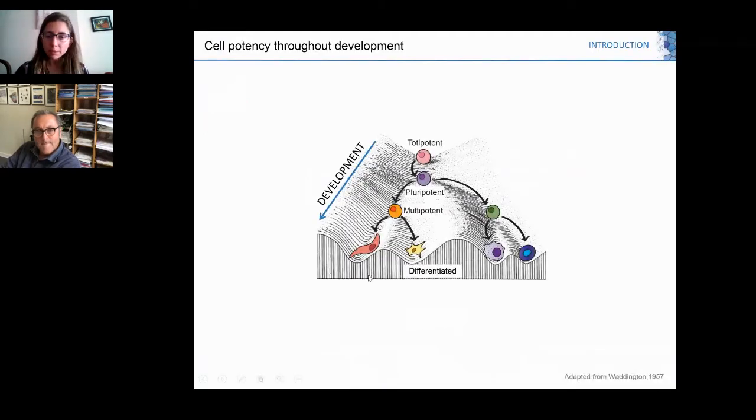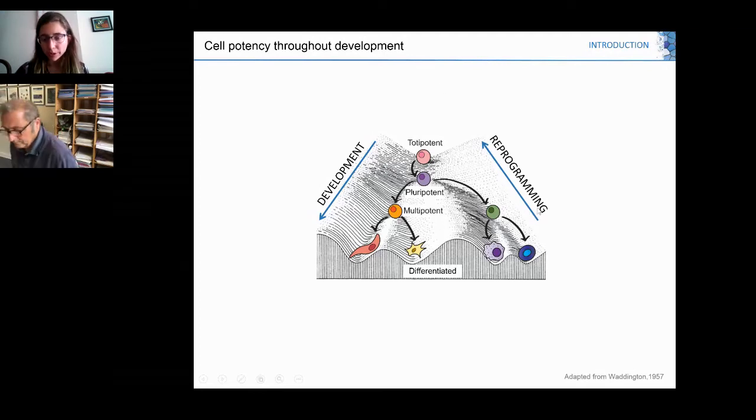During development, cell potency was thought to be unidirectional, from a totipotent cell at the top of a hill to differentiated cell types. However, in recent years it has been well established that cells can go back to a more primitive state in a process called cellular reprogramming.